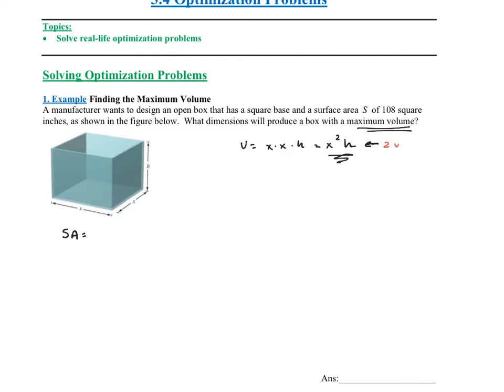Anytime you have two variables, you're not going to be able to take the derivative and maximize it like you want to. We have to get this volume in terms of one variable. We need to use the given information to figure out what one of the variables is in terms of the other. So let's go back to the other equation, which was surface area.